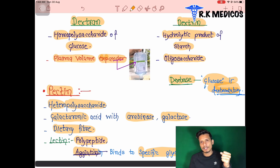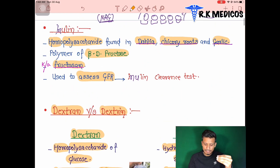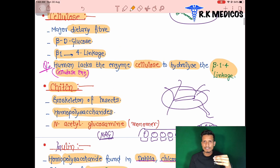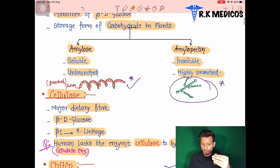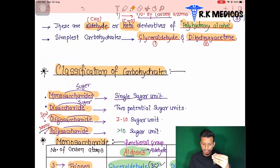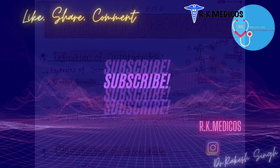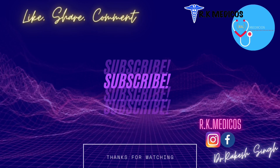So that covers carbohydrate chemistry — the different types and their classification, examples of each class, the different types of bonding present between carbohydrates, and structural examples. In the next topic we will learn about isomerism. Thank you, see you in the next video, bye bye, take care.